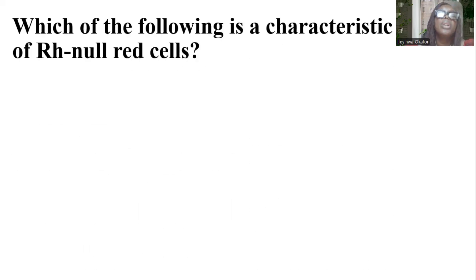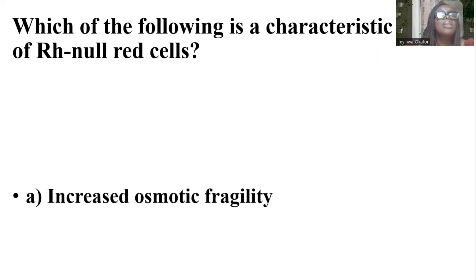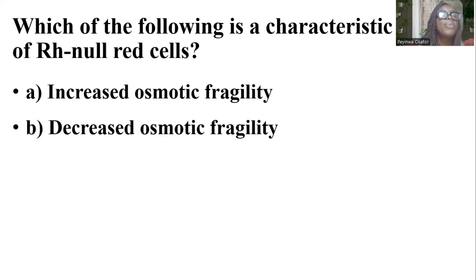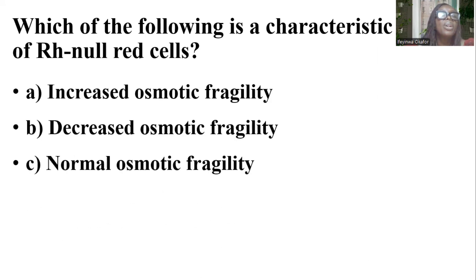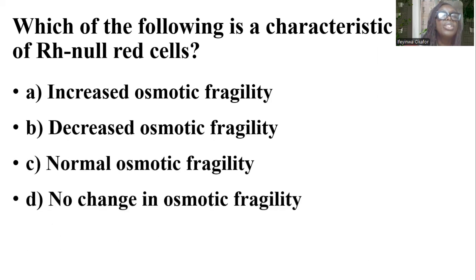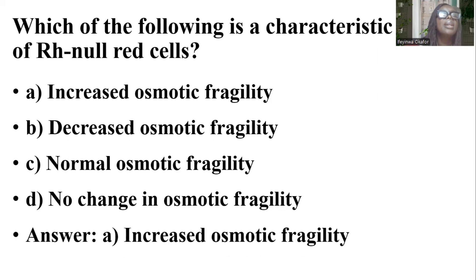Which of the following is a characteristic of RH-null red cells? Options are: increased osmotic fragility; decreased osmotic fragility; normal osmotic fragility; no change in osmotic fragility. And the answer is A — increased osmotic fragility.